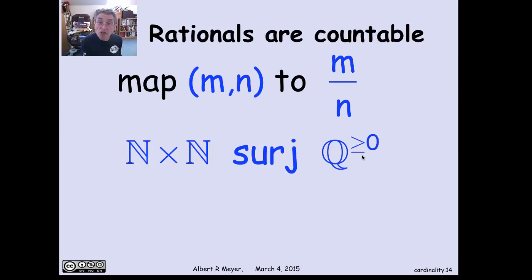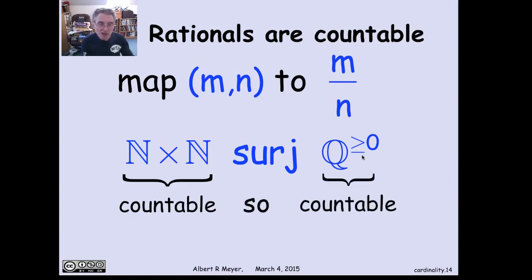So in effect, what we have is a surjection from the pairs of non-negative integers, which we know is countable, onto the non-negative rational numbers, quotients of integers, which means that the rationals, sure enough, are countable, even though they seem to be spread out all over the line. So again, we saw that N×N is countable, and there's a surjection described above to the non-negative rationals, so they're countable.